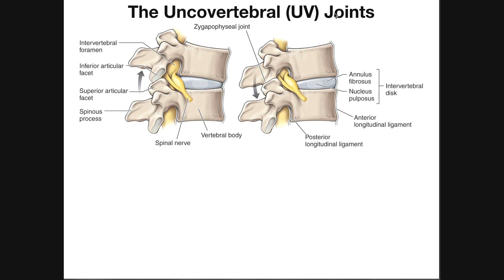When we talk about the cervical spine, it's divided into two regions. The top region is relatively short. It really just consists of the atlanto-axial and atlanto-occipital joints. The atlanto-occipital joint is the joint between the atlas, which is C1, and the skull, whereas the atlanto-axial joint is the joint between the atlas and the axis, C1 and C2.